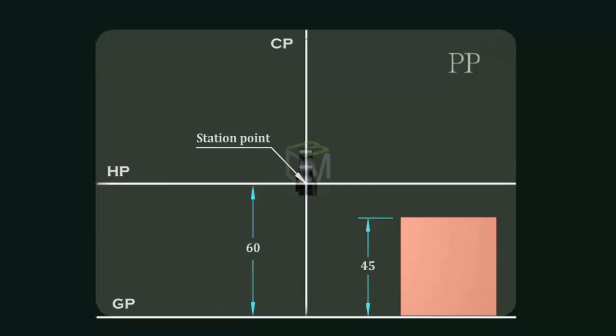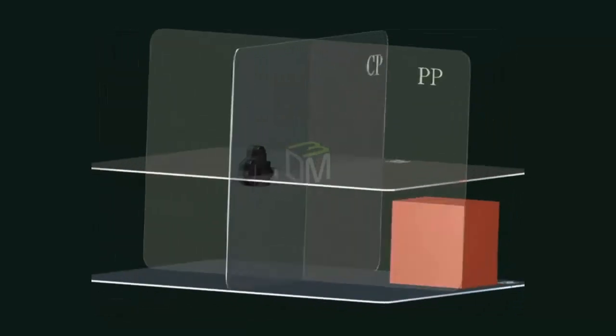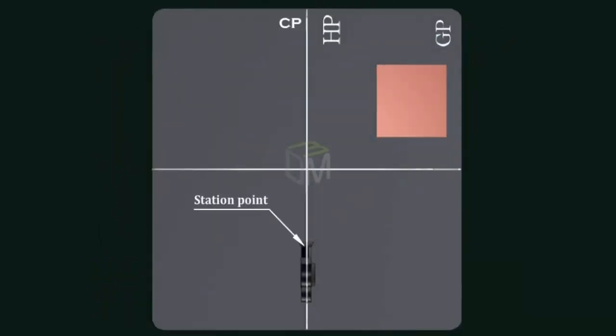The central plane is perpendicular to both ground plane and picture plane and it contains the station point.